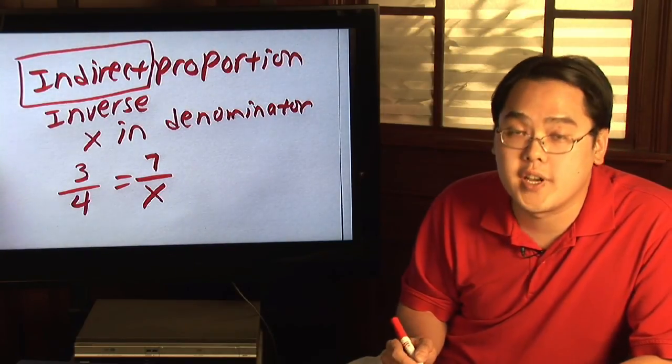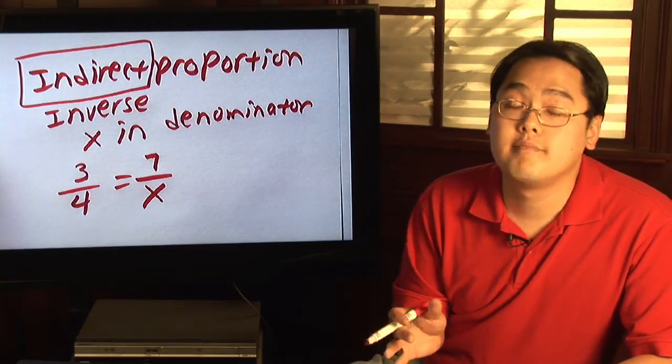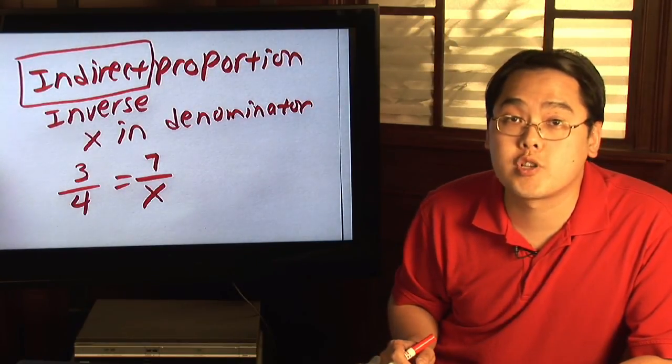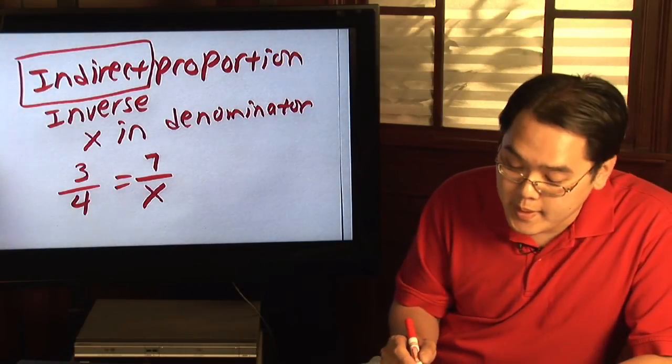This is an example of an indirect proportion problem because you have an x in the denominator. But if you know how to solve proportion problems you'll know that the strategy here is to cross-multiply.